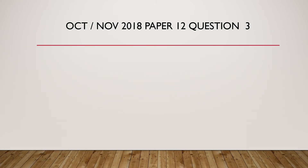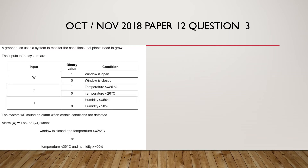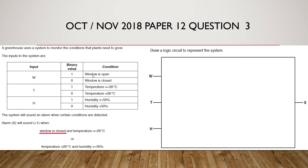Next example: October/November 2018, Paper 1, Question 3. A greenhouse uses a system to monitor conditions that plants need to grow. It generates an alarm x when the window is closed and temperature is greater than 26, or temperature is less than 26 and humidity is greater than 50%. Window closed means w=0. Temperature greater than 26 means T=1. Temperature less than 26 means T=0. Humidity greater than or equal to 50% means H=1.